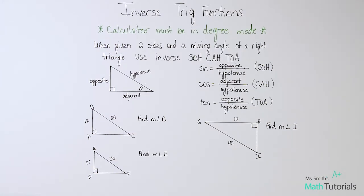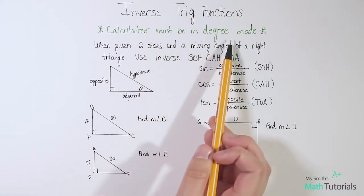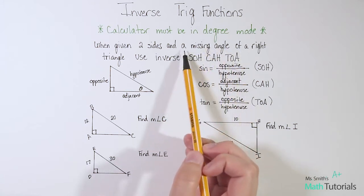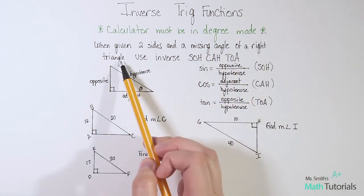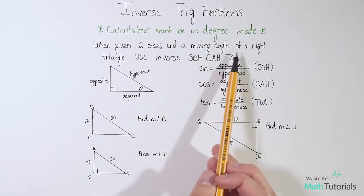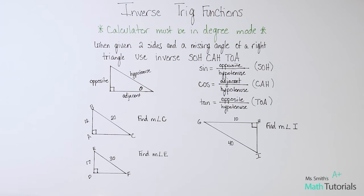Now let's get into inverse trig functions. We're going to use the inverse of SOHCAHTOA when we have been given two sides and we have a missing angle — that's the big red flag. When you have a missing angle of a right triangle and are given two sides, use inverse SOHCAHTOA. The big difference is with regular SOHCAHTOA we're looking for a missing side; with inverse SOHCAHTOA we're looking for a missing angle.